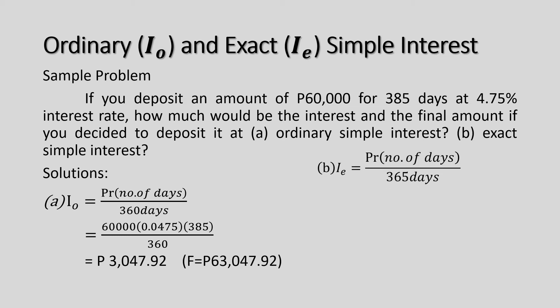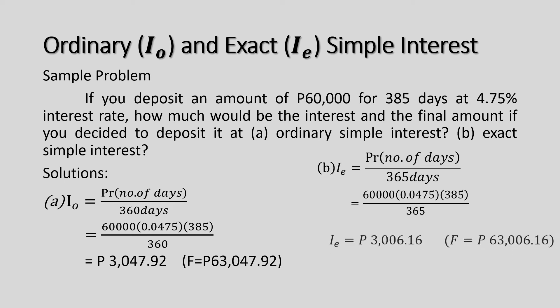For the exact simple interest, the formula is the same; however, the denominator is 365 days. Substituting the values of P, R, and number of days: 60,000 times 0.0475 times 385 divided by 365 gives an exact simple interest of P3,006.16. Adding this to the principal, the final amount using exact simple interest is P63,006.16.